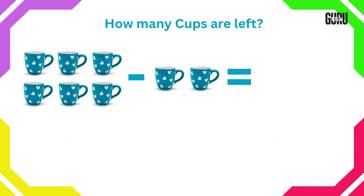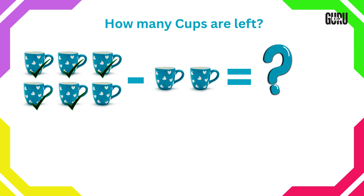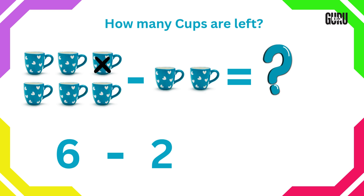How many cups are left? Here we have to do subtraction. Let's count. 1, 2, 3, 4, 5, 6 and 1, 2. So 2 cups need to be crossed out from 6.